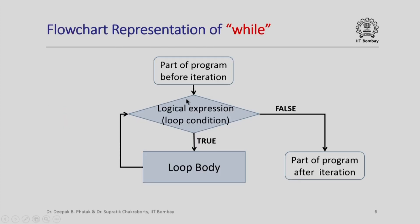As a flowchart, this can be represented as follows: we have the part of the program before iteration, then we check the loop condition — if true we go through the loop body and check again; if false we exit to the part of the program after iteration. Here is a simple animation of how control might flow through a while loop — the red dot indicates control flow, which may go around the loop a few times and then come out.